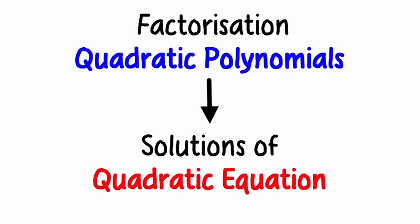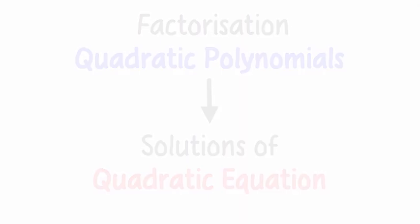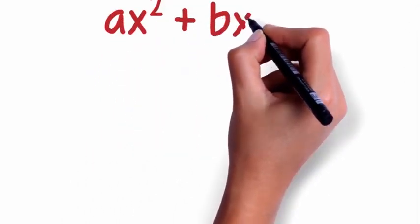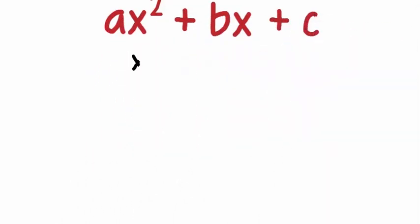Before we move on to finding the solution of a quadratic equation, let's quickly review how to factorize quadratic polynomials. The general form of a quadratic polynomial is ax² + bx + c. Here is the first quadratic polynomial.